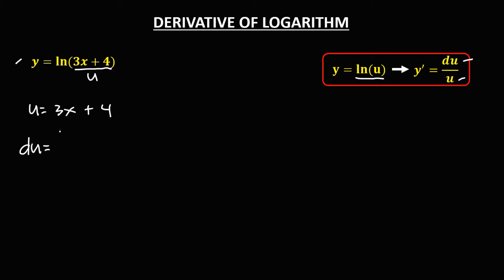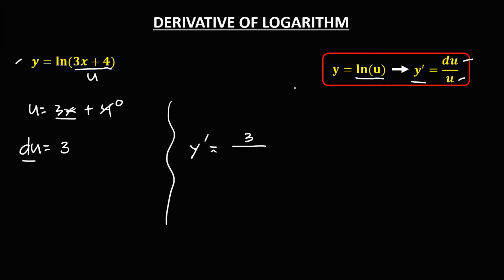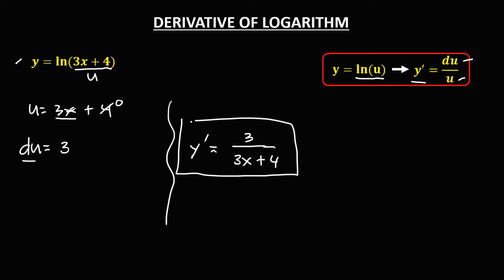To find the derivative of u: the derivative of 3x, we drop the x, giving us 3. The derivative of the constant 4 is 0, so du equals 3. Therefore, y prime equals du over u, which is 3 over (3x plus 4). This is now the derivative.